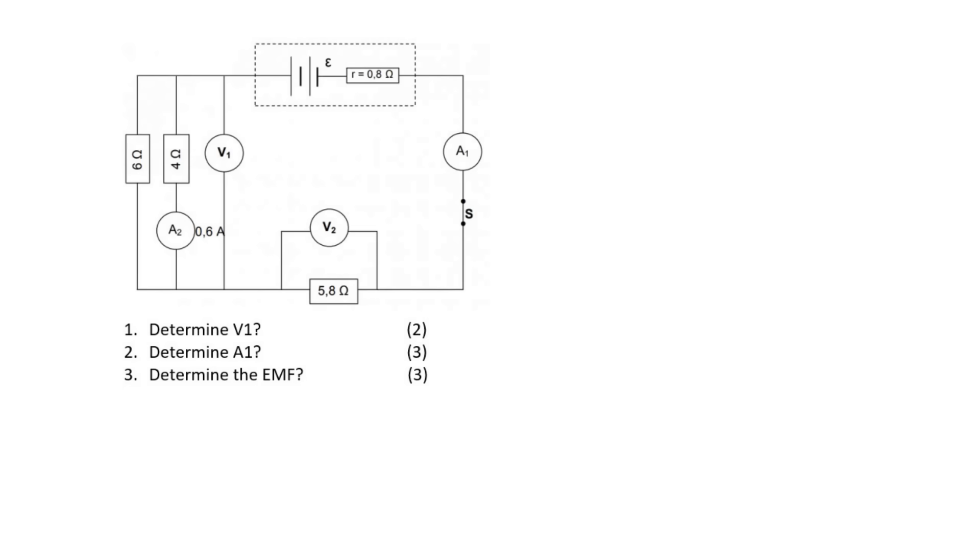If you look at this branch over here, you should realize that we've got the current which is 0.6 amps and then we've got the 4 ohm resistor. So we could use V equals I times R just for that little branch over there, and so that's going to be equal to 0.6 multiplied by 4, and that's going to give us 2.4 volts.